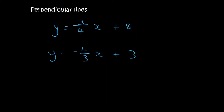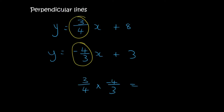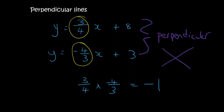For example, with these two lines, the gradient of the first one is 3 over 4 and the gradient of the second one is negative 4 over 3. If you multiply those together you get negative 1, which means these two lines are perpendicular. If you drew them, they would cross each other at 90 degrees.